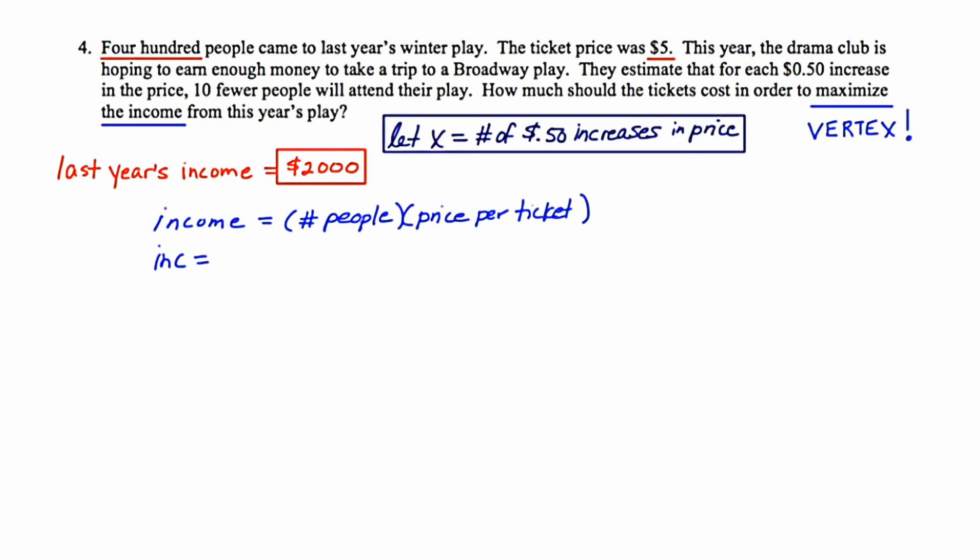So that's going to be critical, this value of x, the number of 50 cent increases in price. What that means is, instead of charging $5, if I were to charge $5.50, then 10 fewer people are going to attend the play. So instead of 400 people coming to the play, only 390 people would come. But who knows, maybe that's a better deal. Maybe overall the drama club will get more money. Let's take this whole idea and generalize it for our function.